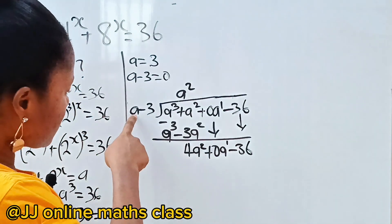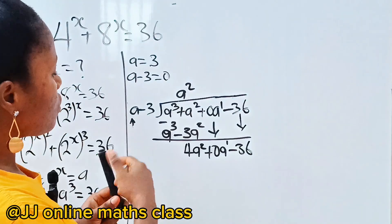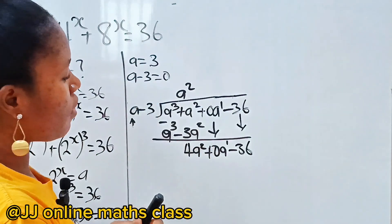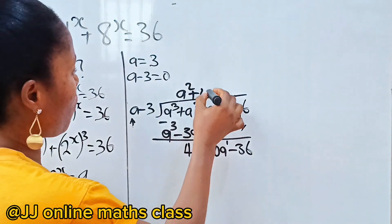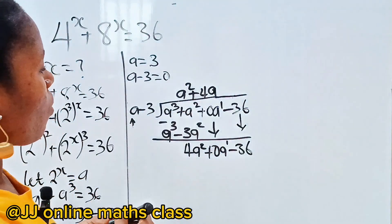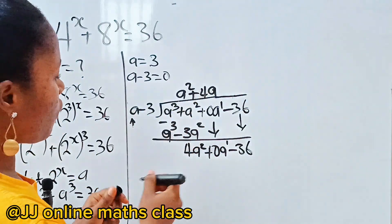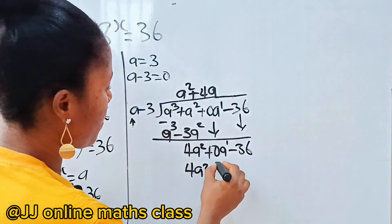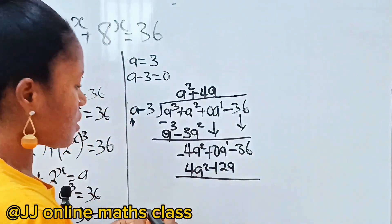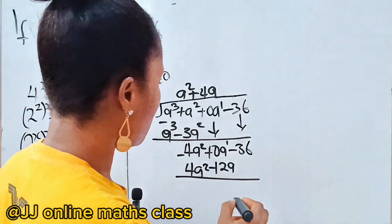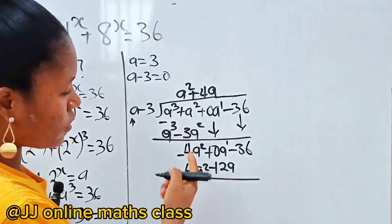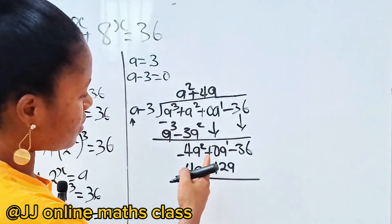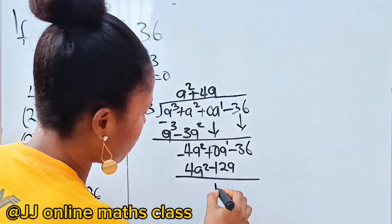First step: a³ divided by a gives a². Then a²·(a - 3) = a³ - 3a². Subtracting: a³ - a³ = 0, and a² - (-3a²) = 4a². So we bring down the 0a term, giving 4a² + 0a.